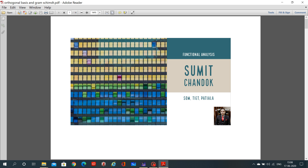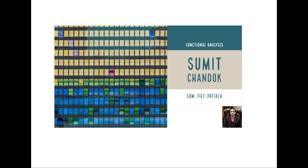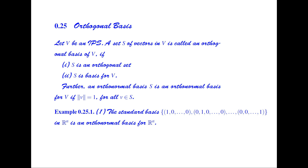Good morning. In this lecture we discuss the orthogonal basis and Gram-Schmidt process. Let V be an inner product space. A set S of vectors in V is called an orthogonal basis of V if S is an orthogonal set and S is a basis for V. Further, S is an orthonormal basis for V if the norm of v equals 1 for all v belonging to S.